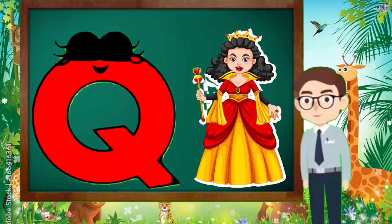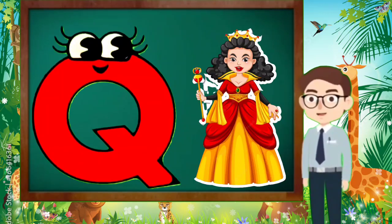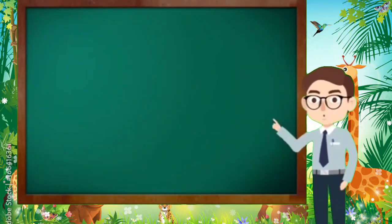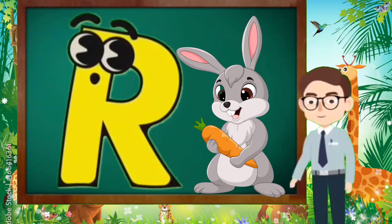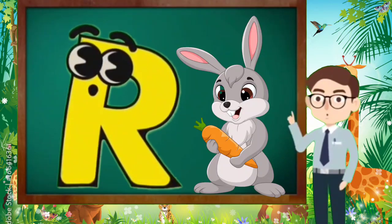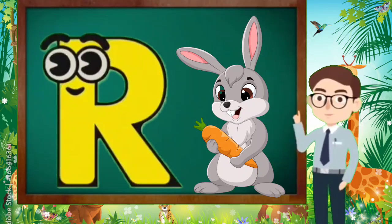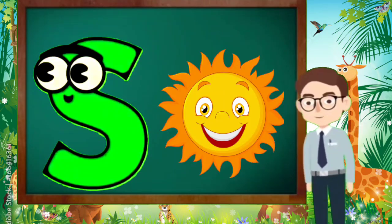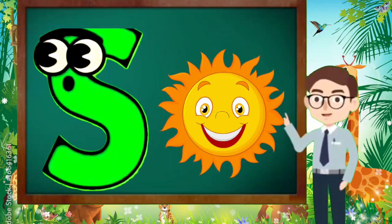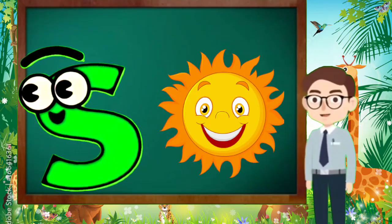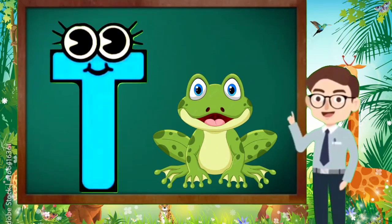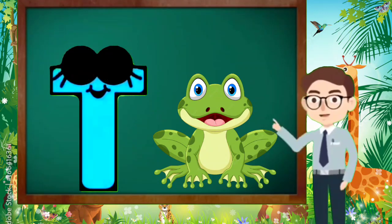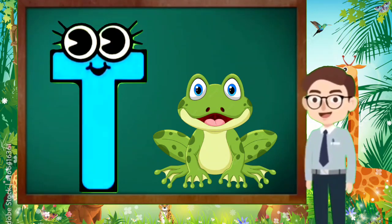Q is for Queen, Q-Q-Queen. R is for Rabbit, R-R-Rabbit. S is for Sun, S-S-Sun. T is for Toad, T-T-Toad.